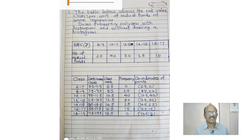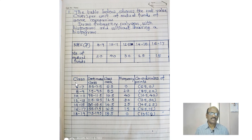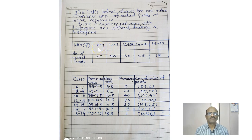Now let us first draw the table. In the table we have the classes. The classes are not continuous. Therefore to make them continuous, the difference between the upper class of the first class and the lower class of the second class is 1, divided by 2, that is 0.5. Therefore subtract 0.5 from the lower limit and add 0.5 to the upper limit, and then you will get the continuous classes.